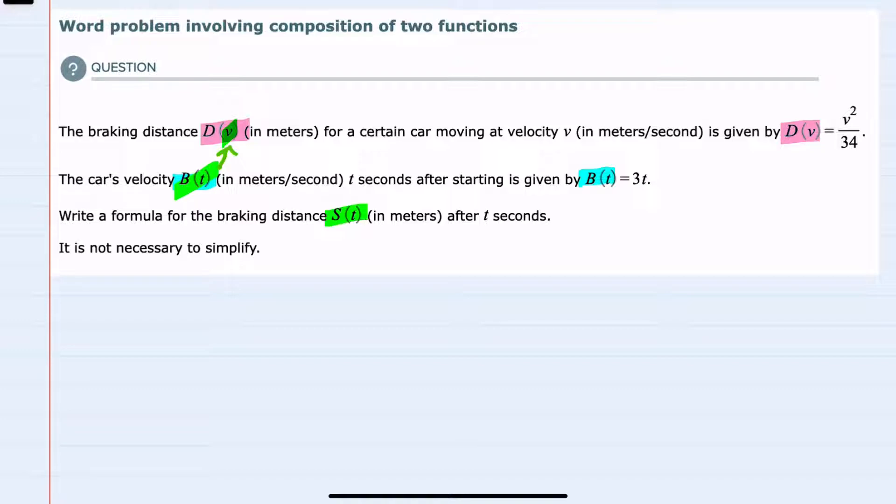So just to write out what this is, to find our s of t function, stopping distance as a function of time, we're going to put our velocity function, b of t,